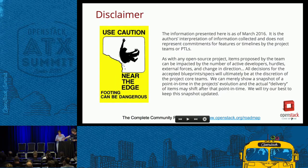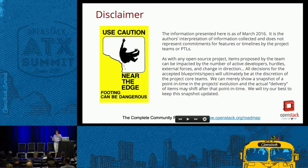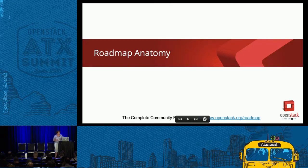Rarely is a conversation about roadmaps completed without some type of disclaimer. The information you're going to see is based upon conversations we had in March with the PTLs — as Mitaka was getting frozen and getting ready to release, but well before the design summit conversations happening this week. So we're using best information to date, and you can expect variations as Newton and Ocata come out. That's why we do regular updates every quarter on the roadmap.